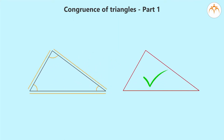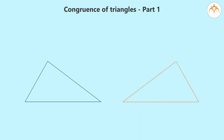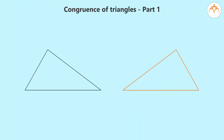These triangles are called congruent triangles. Cut the following triangles as shown on paper. Both the triangles are similar. When the first triangle is turned in the opposite direction — that is, when the back side is turned into the front side — then we get the second triangle.